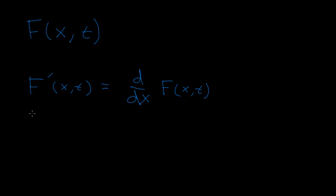And f double prime, two primes, just means two derivatives with respect to x. So this will be two derivatives with respect to x of f of x and t.